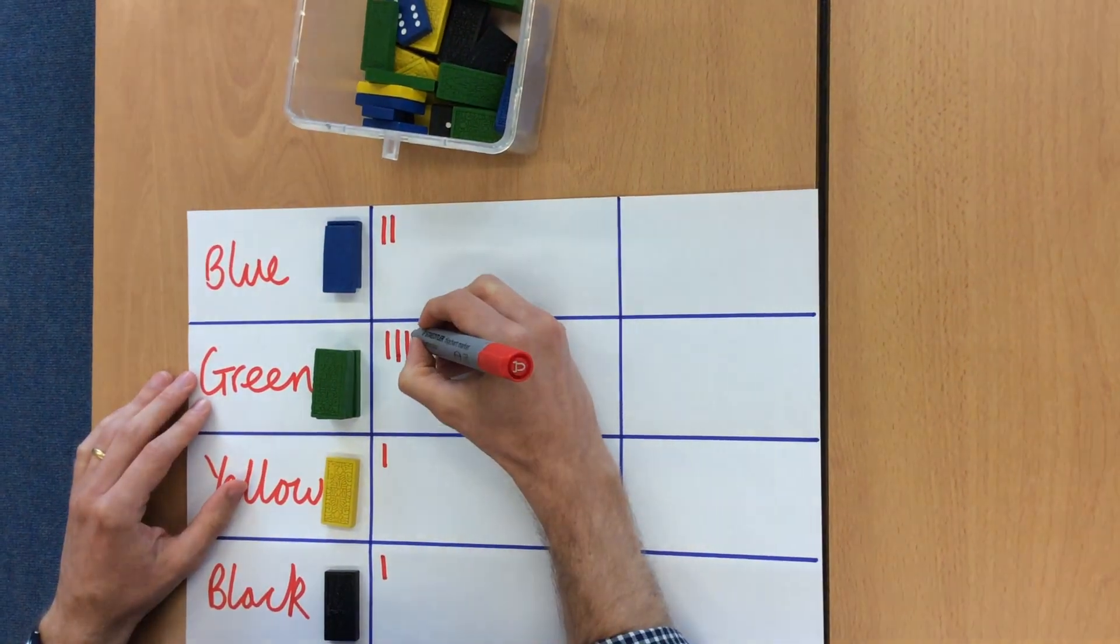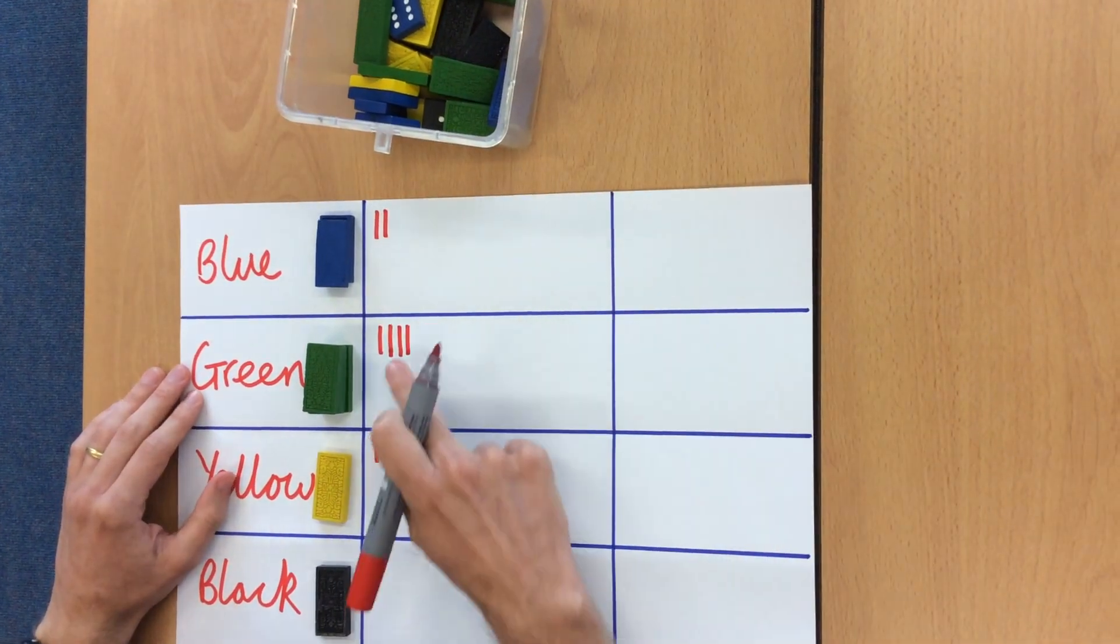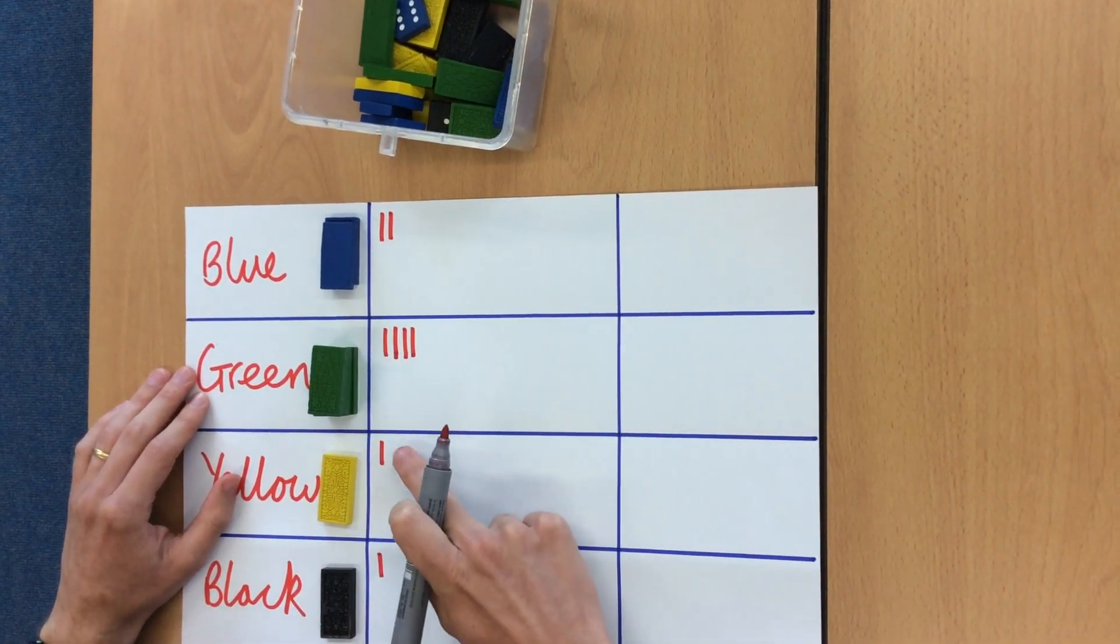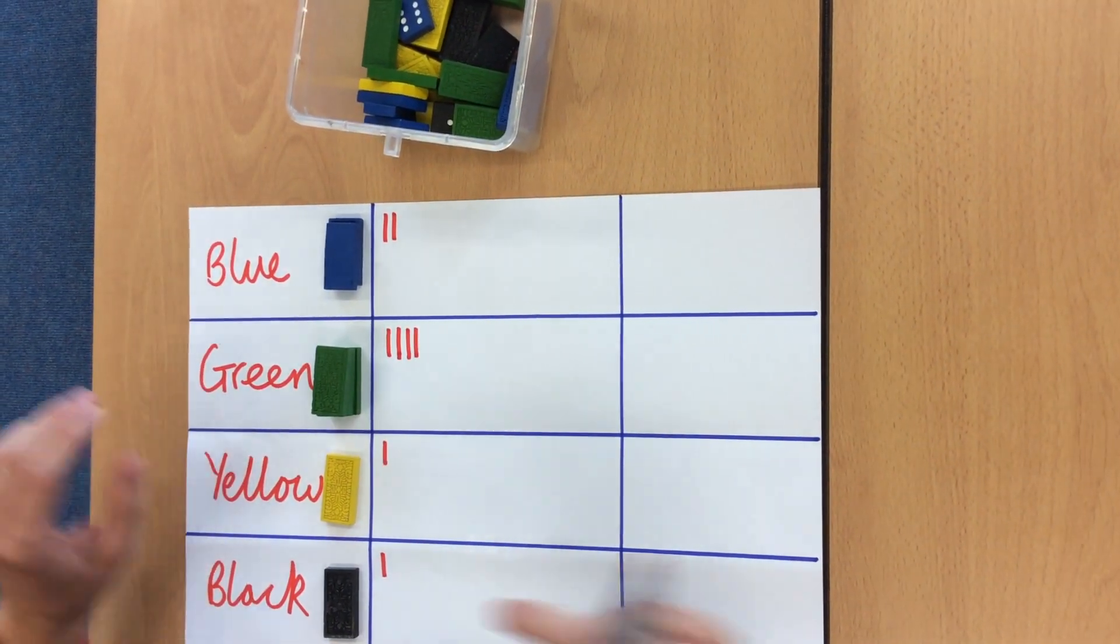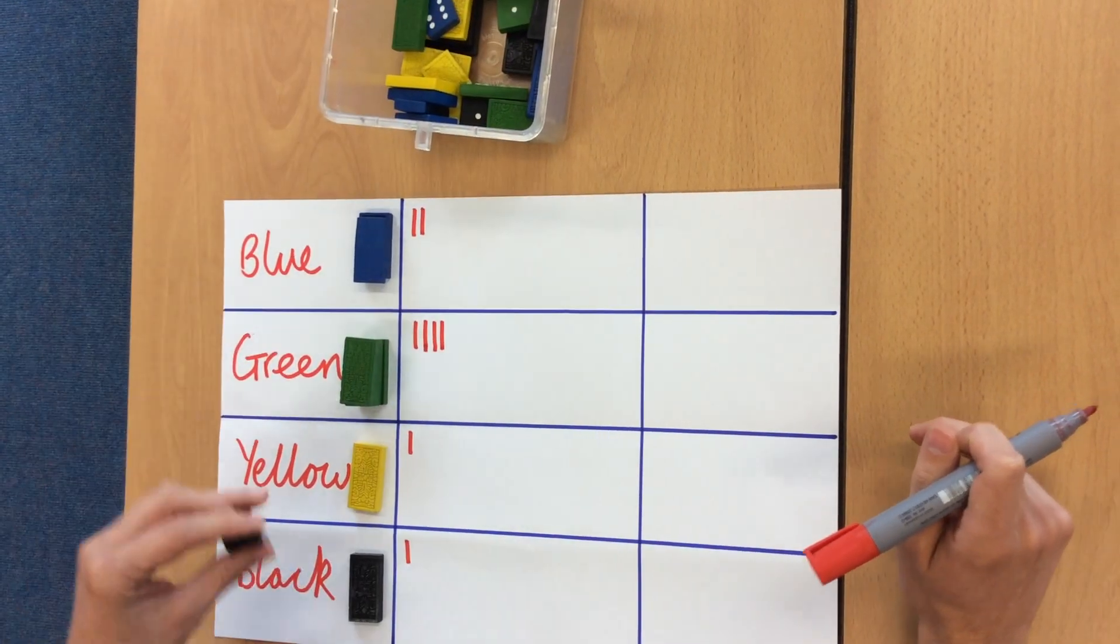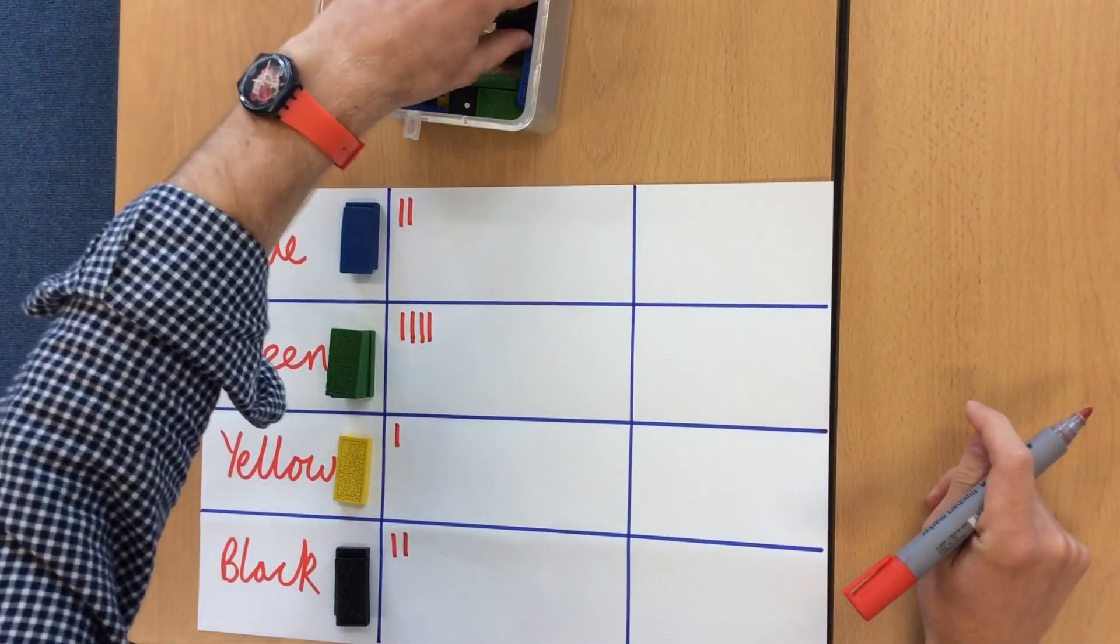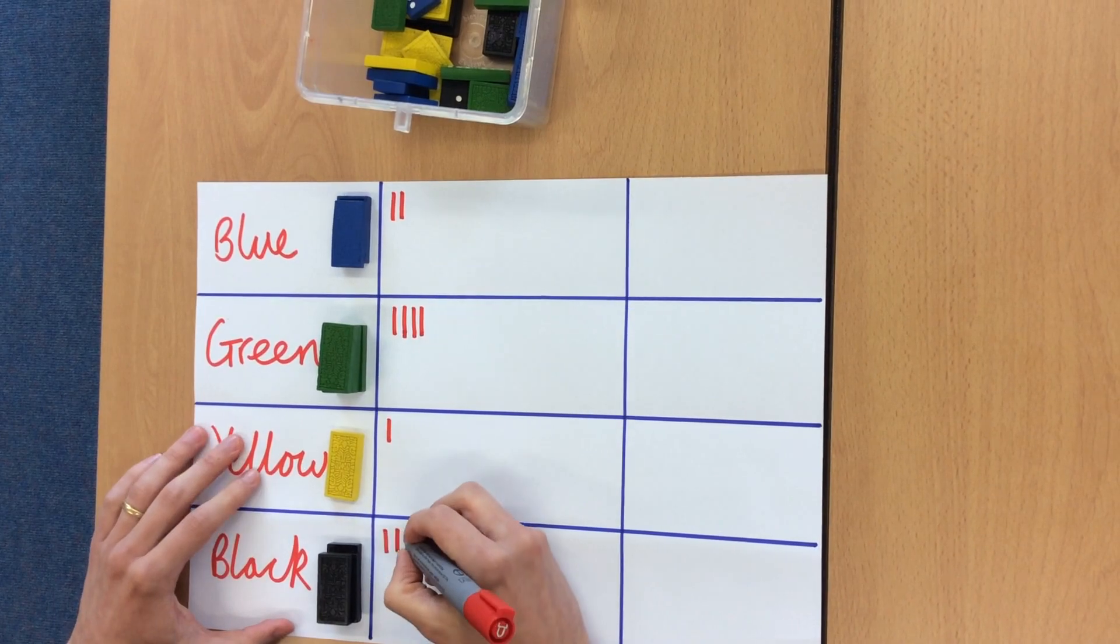Green again, gosh they are very popular, the green ones in that jar. So I have now got four greens, two blues, one yellow and one black. Let's see what else we have got in here, another black, so now I have got two on my black, another black, three!